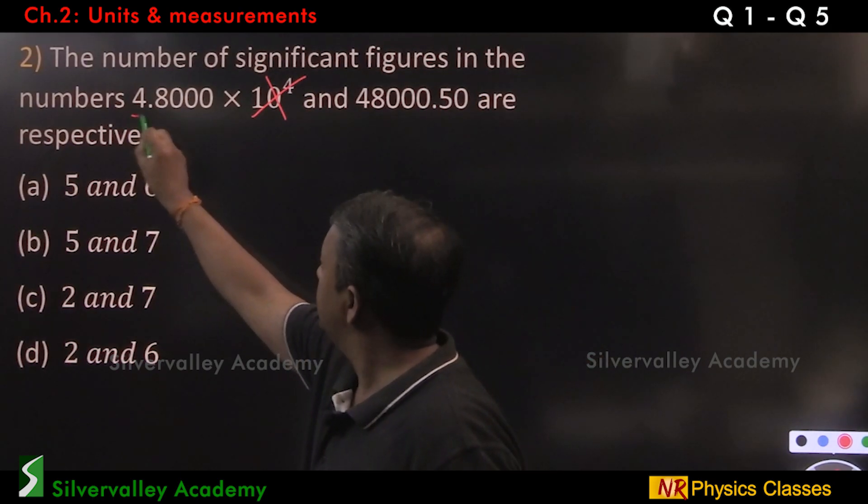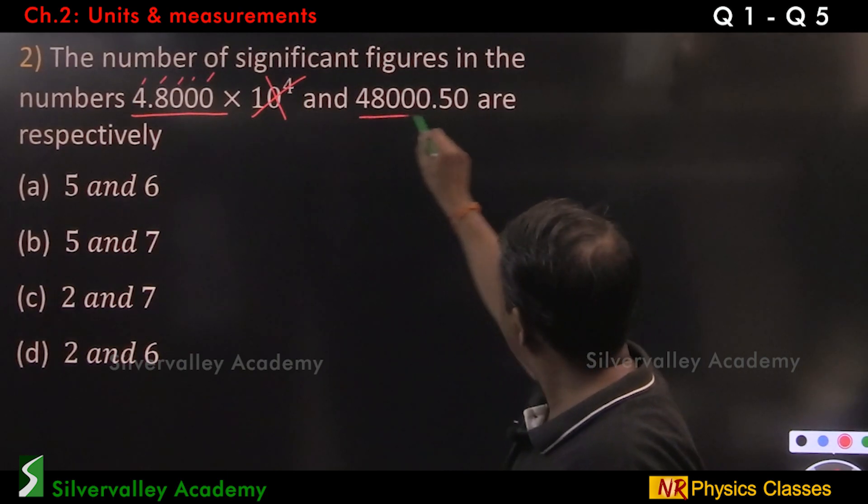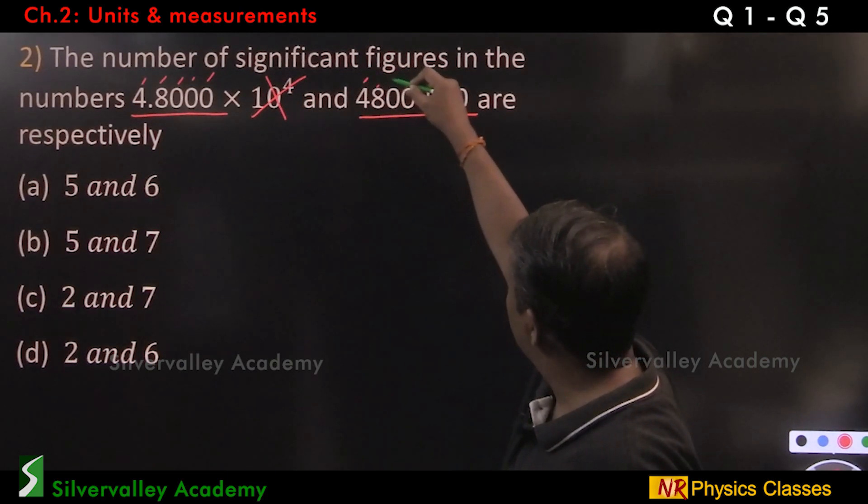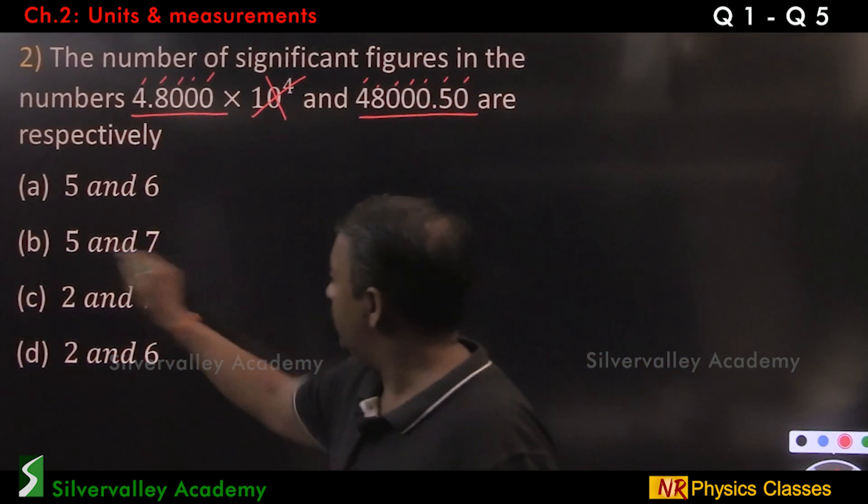Here, these are significant. 1, 2, 3, 4, 5. All these are significant. 1, 2, 3, 4, 5, 6, 7. So 5 and 7.